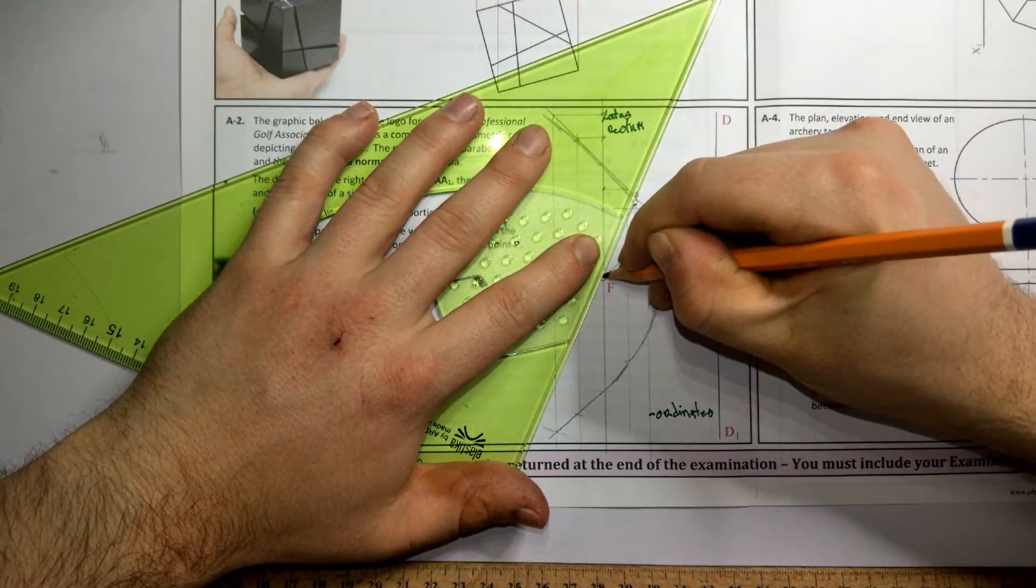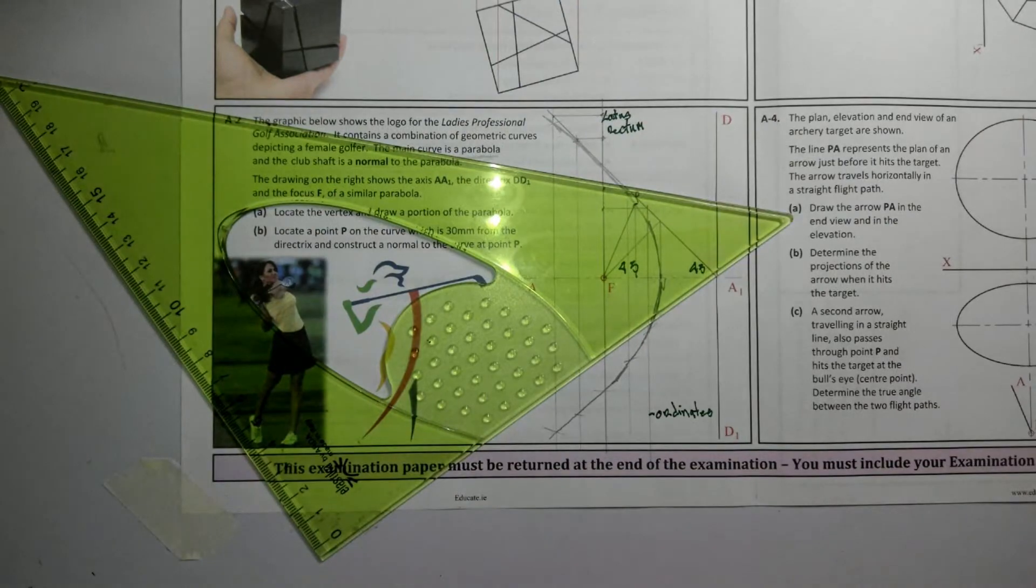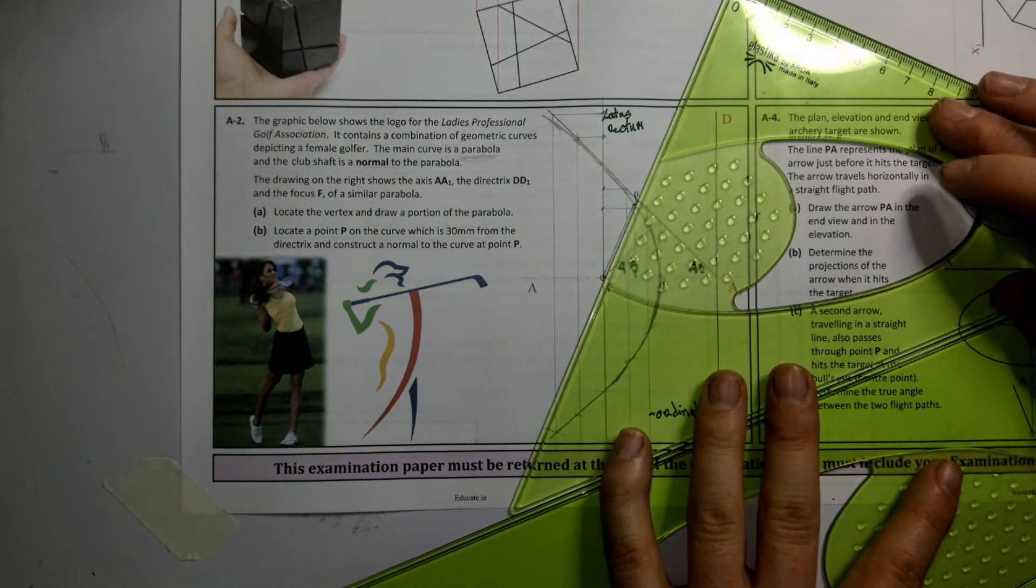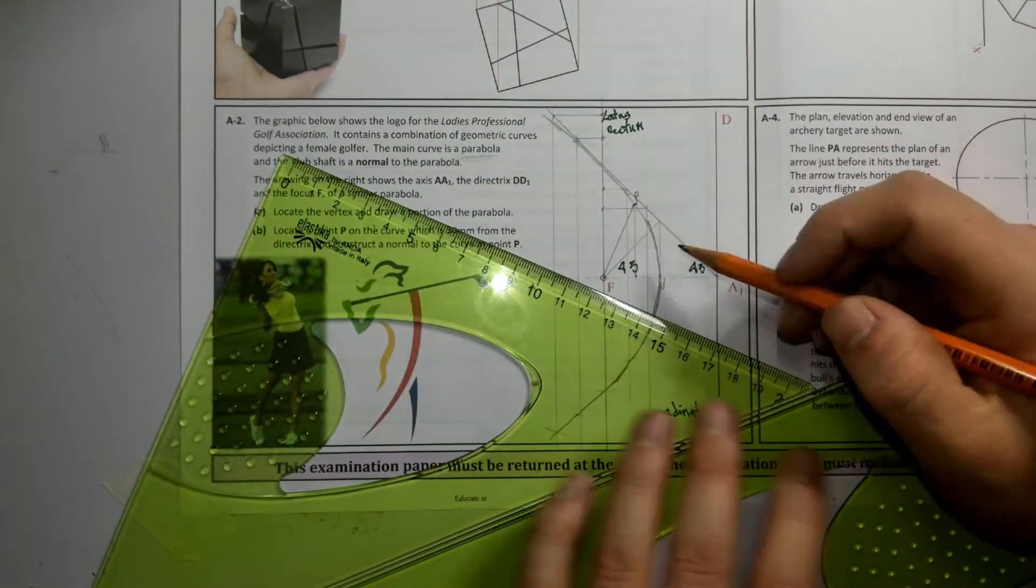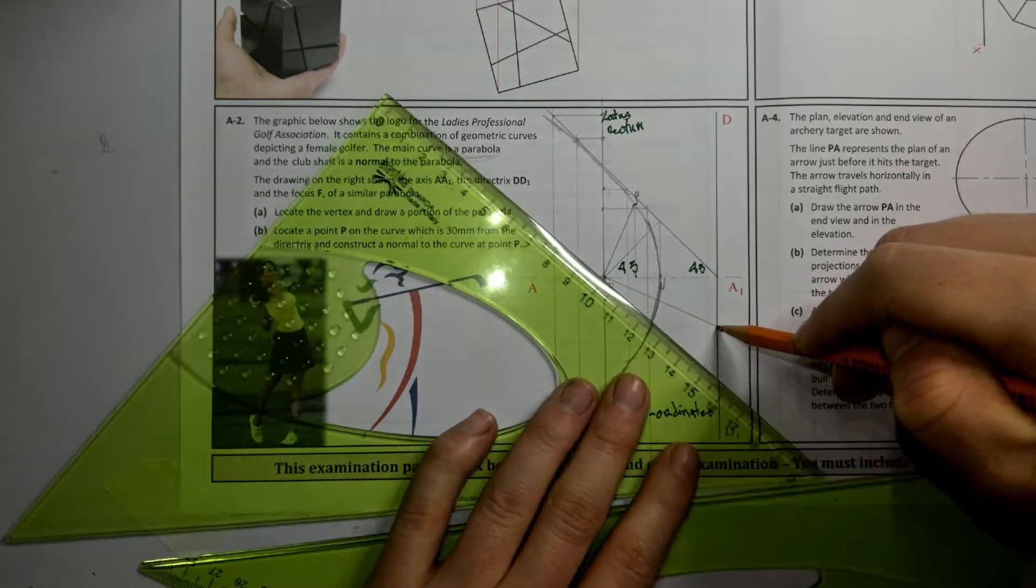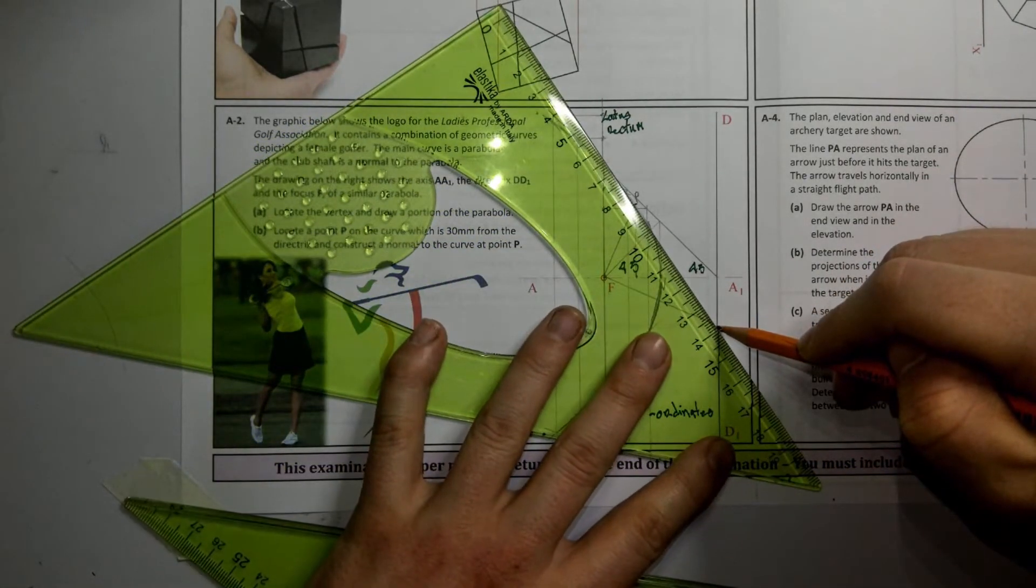To draw the normal, I have to draw a tangent first. I'm going to draw a line from P to F, and then from line P to F, I'm going to go at 90 degrees to that line. Where it hits the directrix is a point on the tangent. I'm going to join that back to P. There's the tangent.